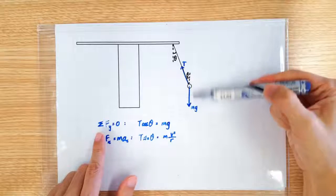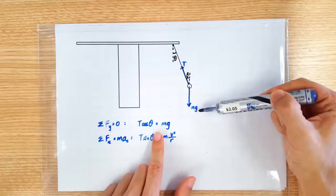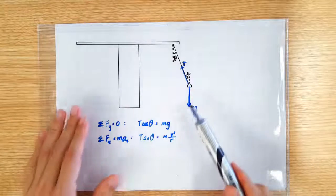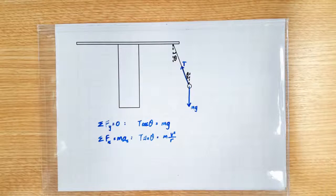Vertically, there's no net force, so the upward T cosine theta is equal to the downward weight. Horizontally, we know that T sine theta provides the required centripetal force. So, T sine theta is mv squared over r.